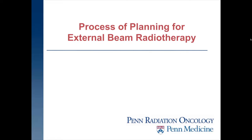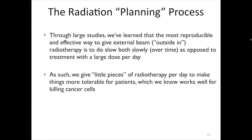Most importantly, let's talk about the process of planning for external beam radiation therapy. The most reproducible and effective way to give external beam radiation is to go slow and steady. We give a little bit of dose each day — 35 treatments typically over seven weeks, given Monday through Friday.